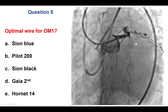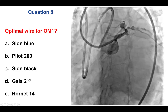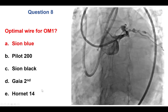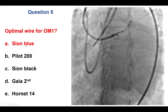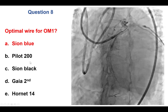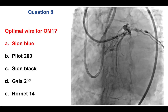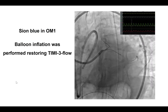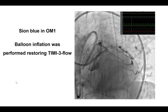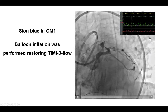The question is how to wire through a dissection plane — optimal wire options being C on Blue, Pilot 200, C on Black, GAIA 2nd, or Hornet 14. The correct answer is a workhorse wire, C on Blue. Non-hydrophilic workhorse wire is preferred because polymer-jacketed wires are likely to follow the dissection path, and stiff wires can worsen the dissection. A C on Blue was advanced to the obtuse marginal branch, flow was restored after balloon inflation, and the patient's hemodynamics significantly improved.